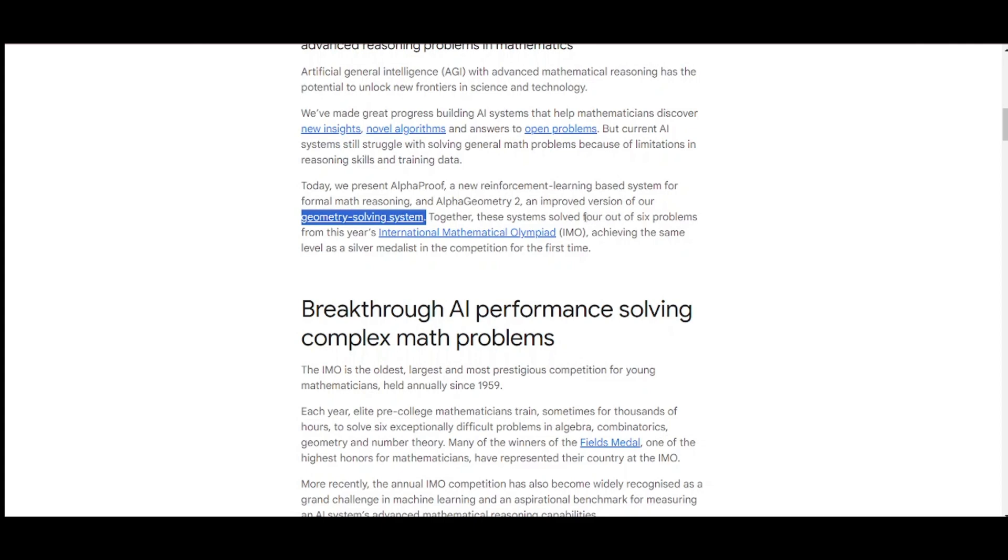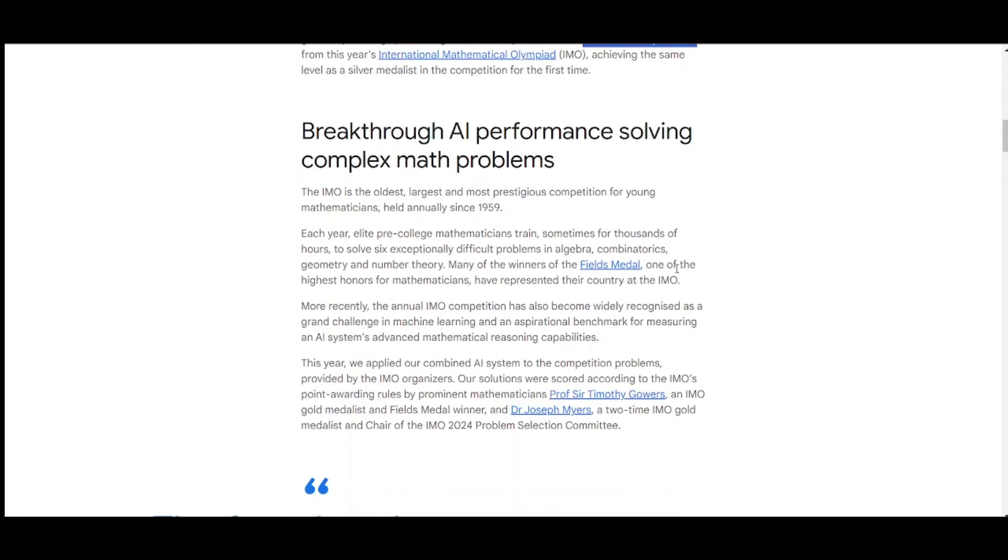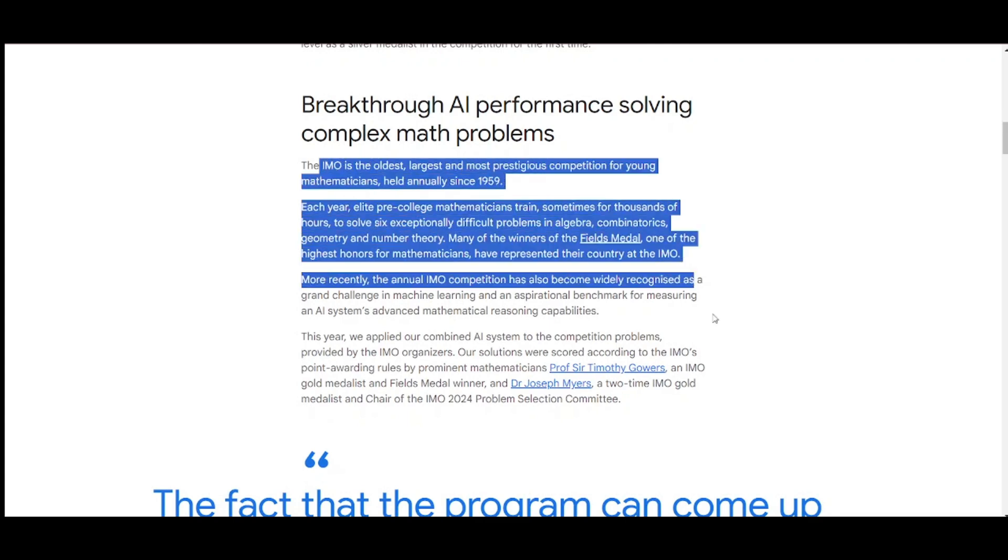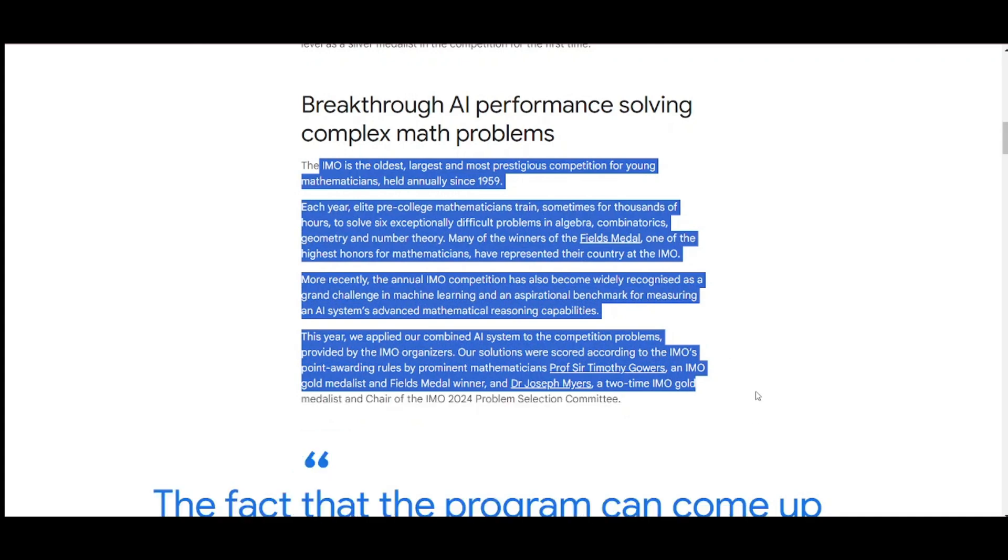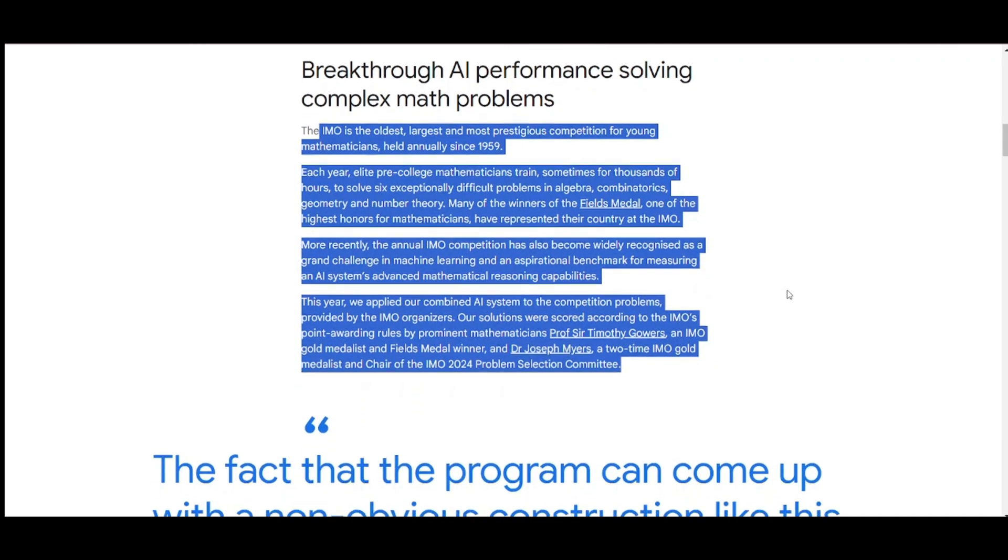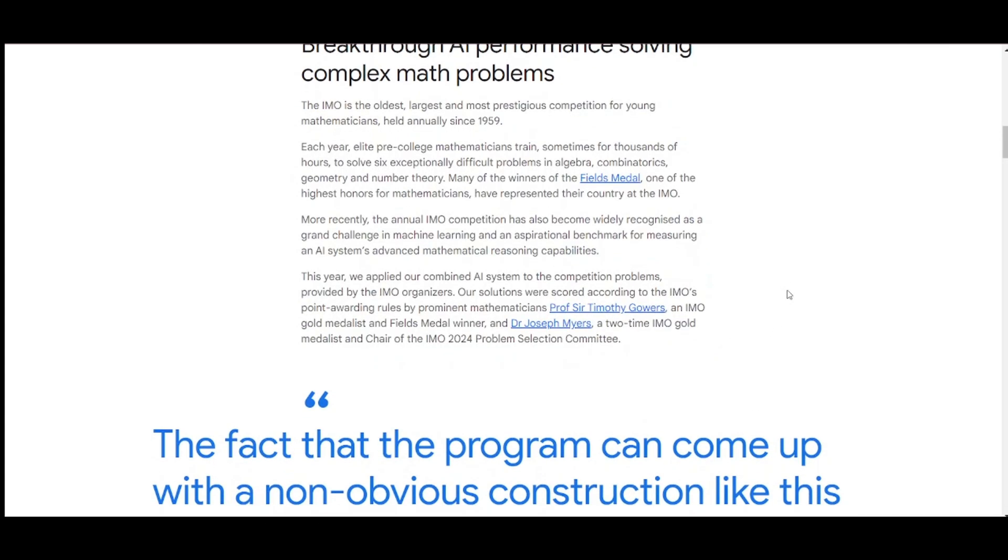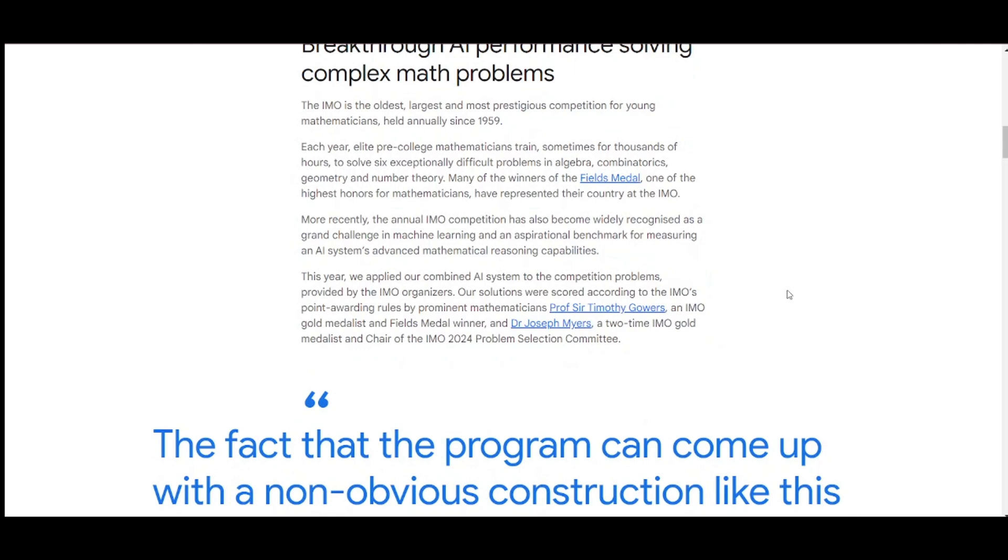The IMO is the oldest, largest, and most prestigious competition for young mathematicians held annually since 1959. Each year, elite pre-college mathematicians train, sometimes for thousands of hours, to solve six exceptionally difficult problems in algebra, combinatorics, geometry, and number theory.